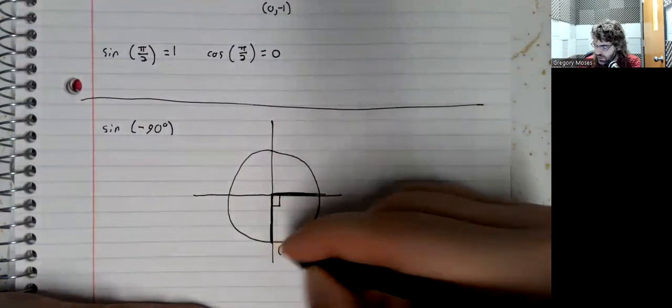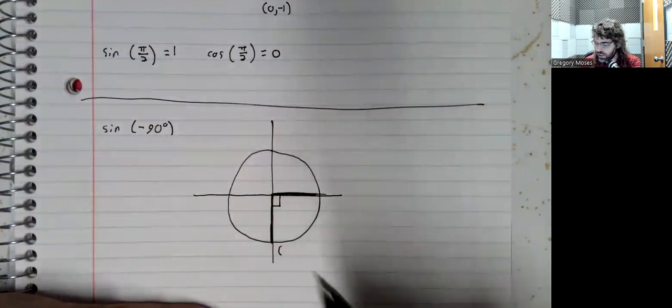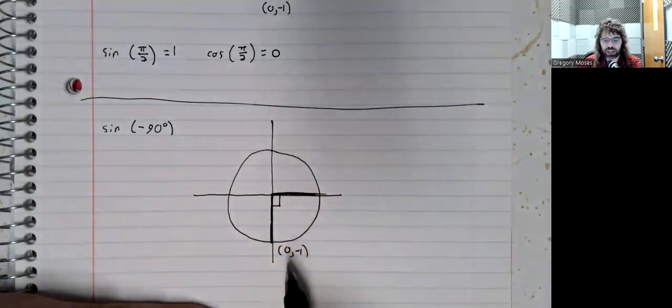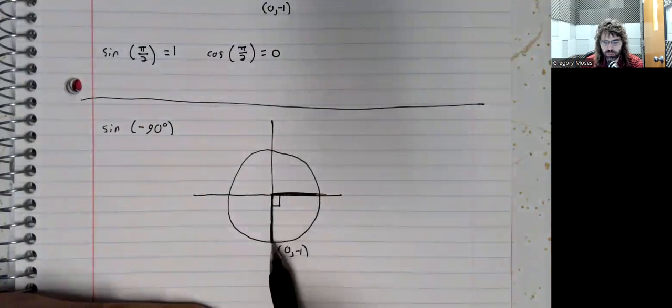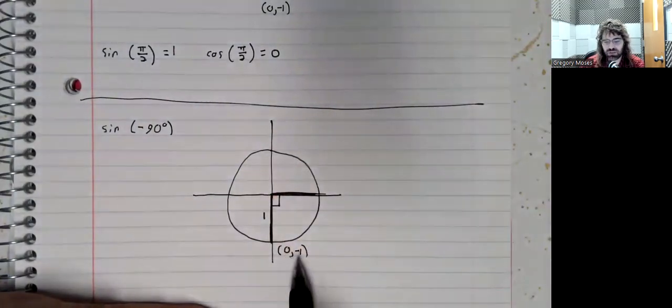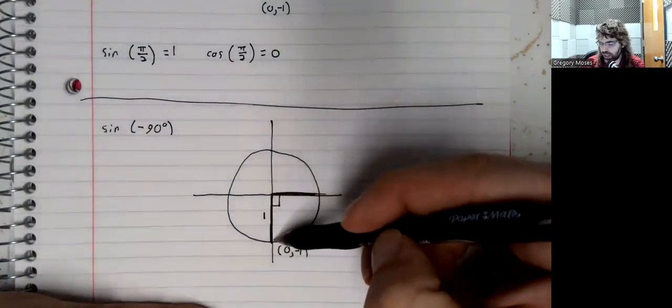Because this is the unit circle, its radius is 1. This is the point (0, -1). This is 0 because we're on the y-axis. All points on the y-axis have an x-coordinate of 0. This 1 because that's the radius of the circle. Negative 1 because we're going down.